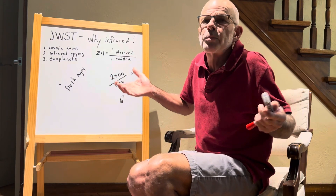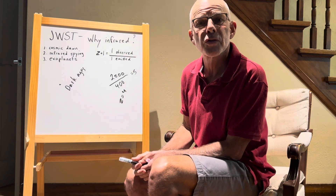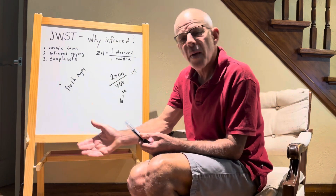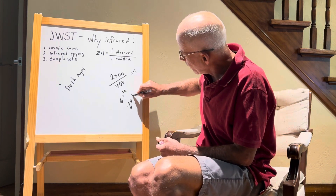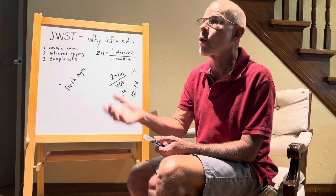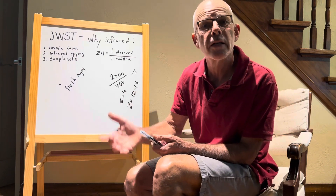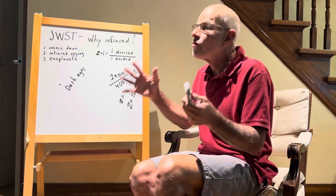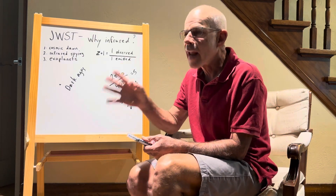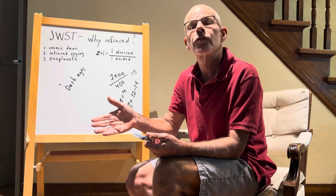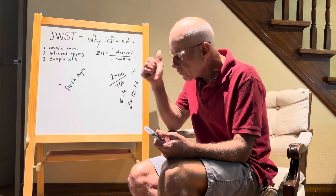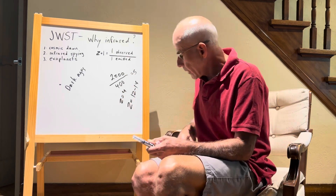Z equals 4 corresponds to light that has been stretched 5 times its original length, corresponding to about 12 billion years ago, or 1 to 2 billion years after the Big Bang. The furthest back we've seen is Z approximately 12 to 14, where we were actually seeing galaxies whose light was emitted only 300 to 400 million years after the Big Bang — very close to the cosmic dawn. So we need infrared because the light has been shifted into the infrared by cosmological redshifting. The first and primary reason is to examine the cosmic dawn.